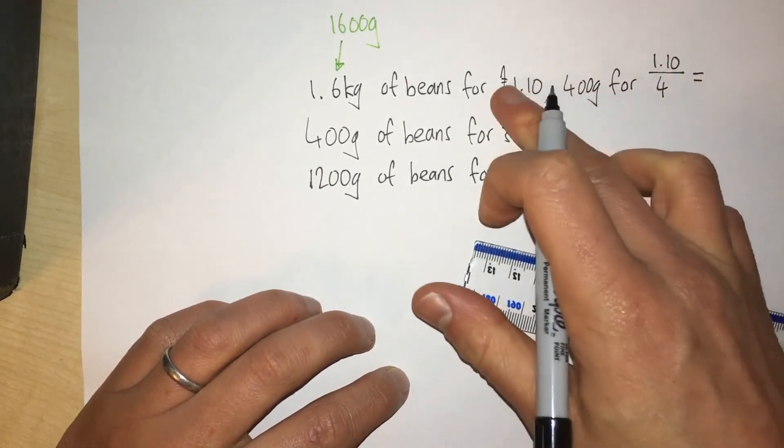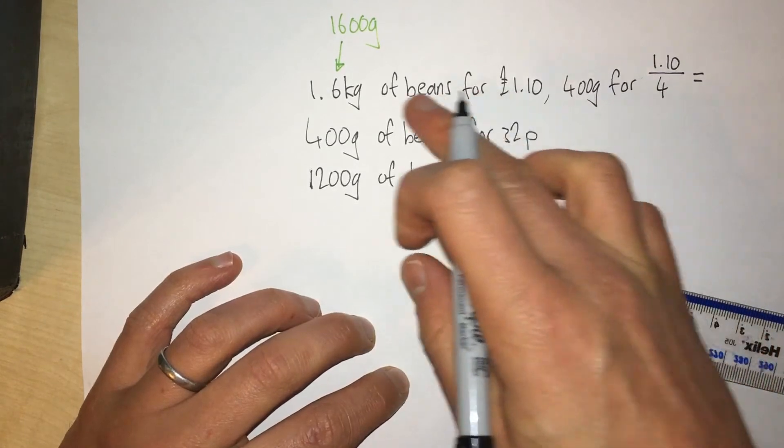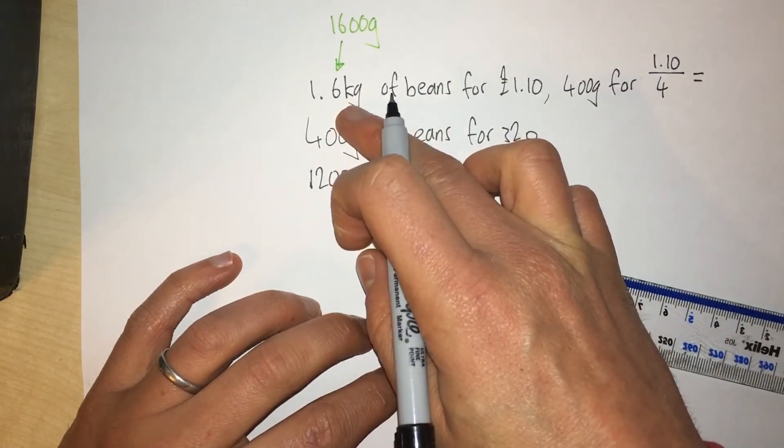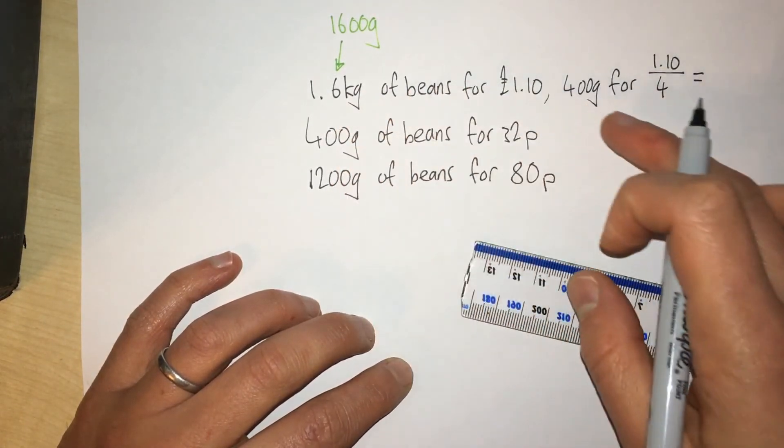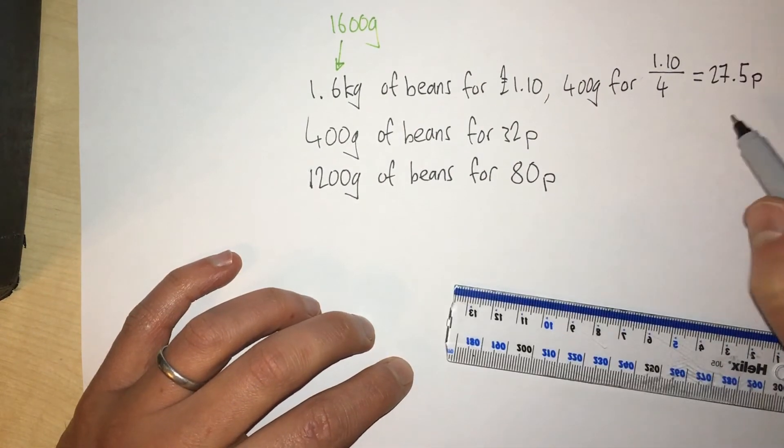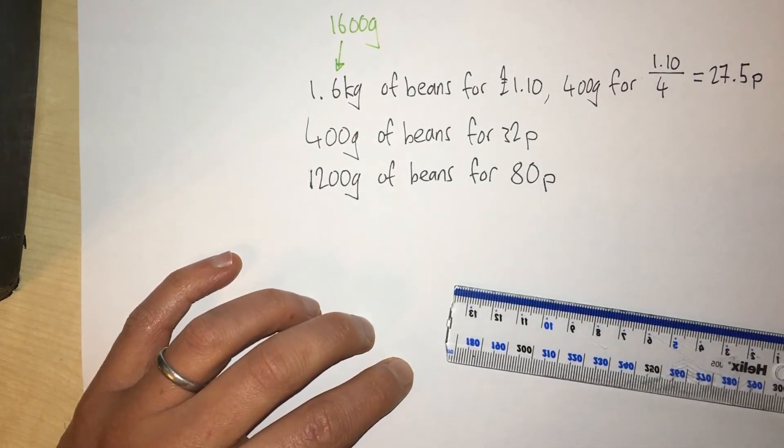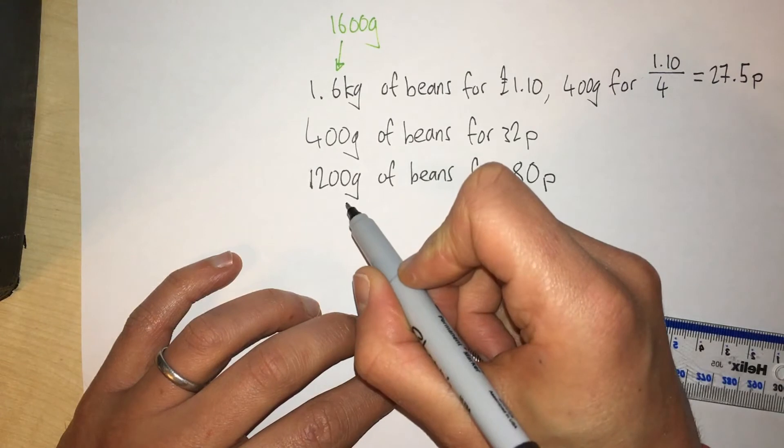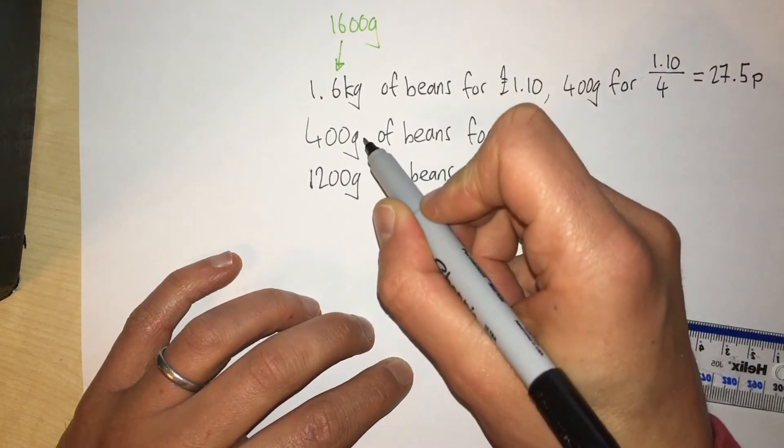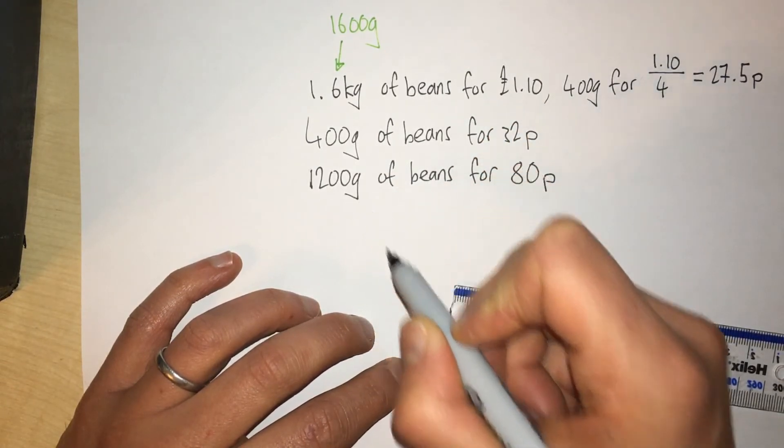I divide this amount by 4 because 400 goes into 1.6 kilograms four times. Now I use the calculator to work that out. This one I'm going to divide it by 3 because 400 grams goes into 1200 grams three times.